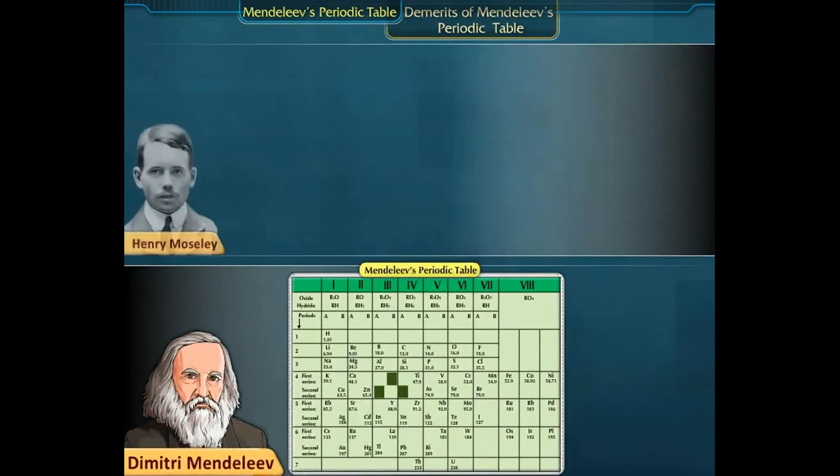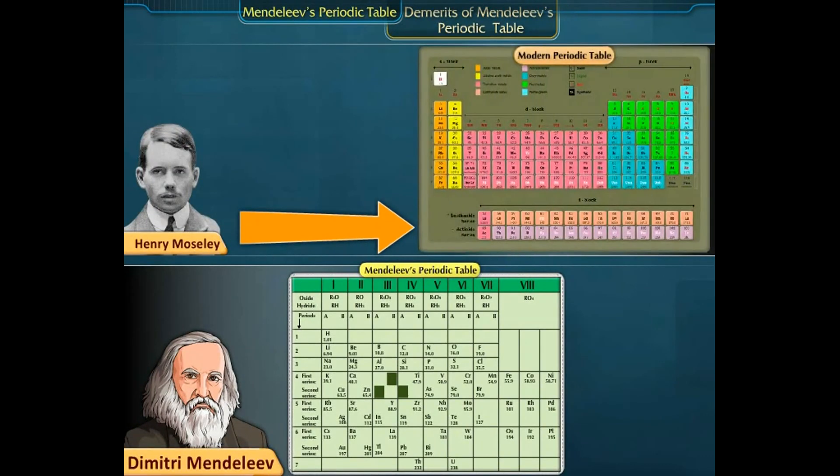Henry Moseley tried to correct these defects in the modern periodic table, which is the present system of classification of elements.